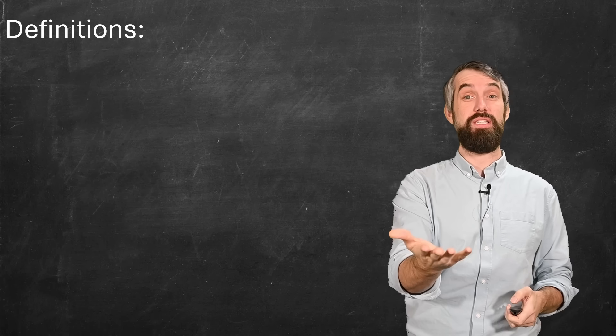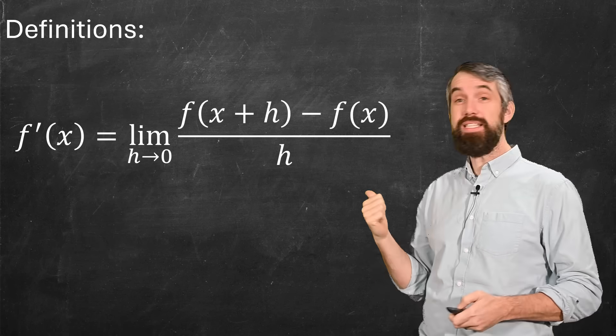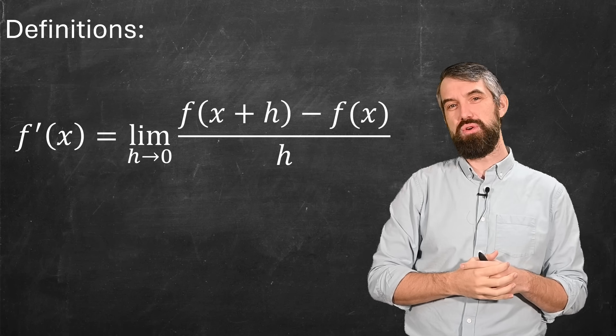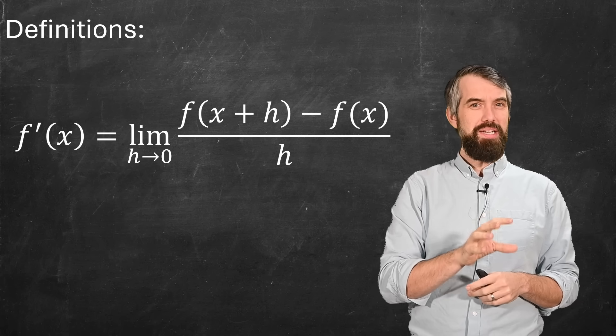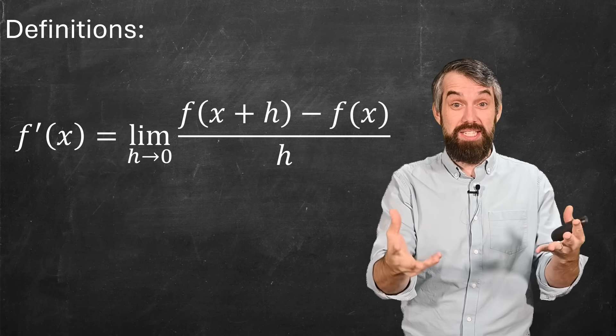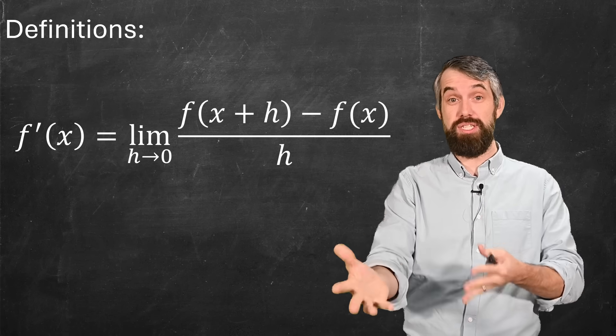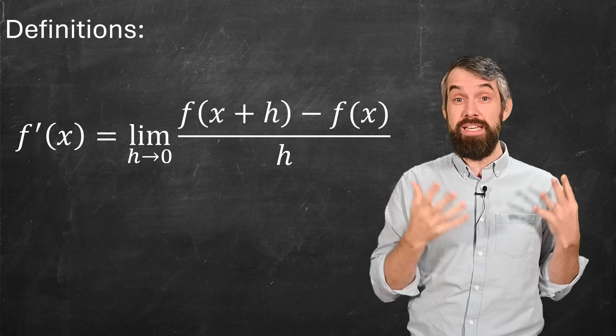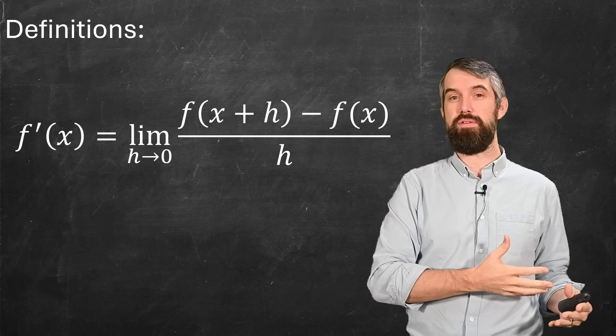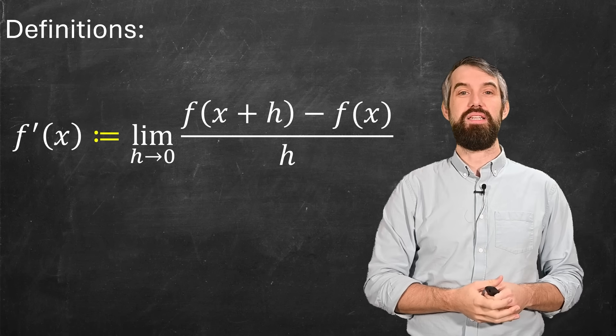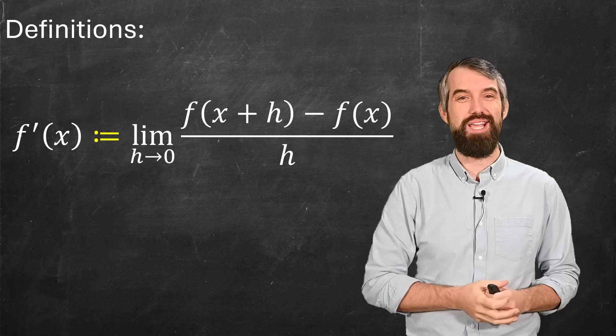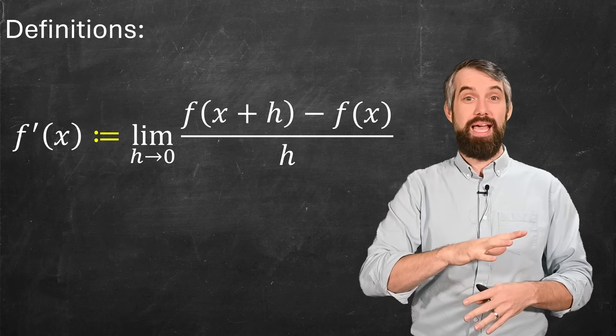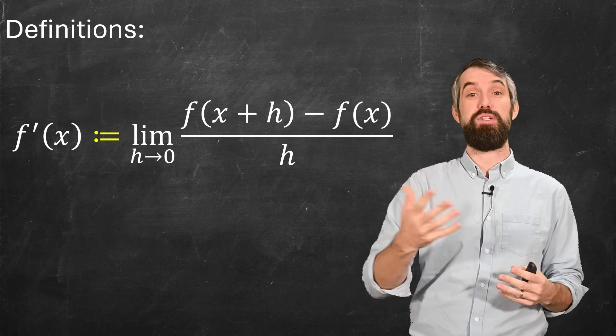I also use equal signs for definitions. Like for example, this is the definition of the derivative you learn in calculus courses. The details don't matter, but the point is the right-hand side calculus students can hopefully understand, and the left-hand side, the derivative, is a definition of what I mean by the derivative. Sometimes you'll see a colon equal sign when you want to say the thing on the left is defined to be the thing on the right. Nevertheless, we're using the equal sign with different meanings.